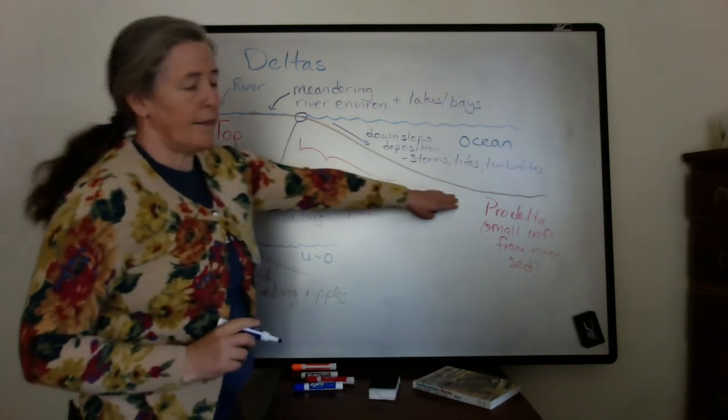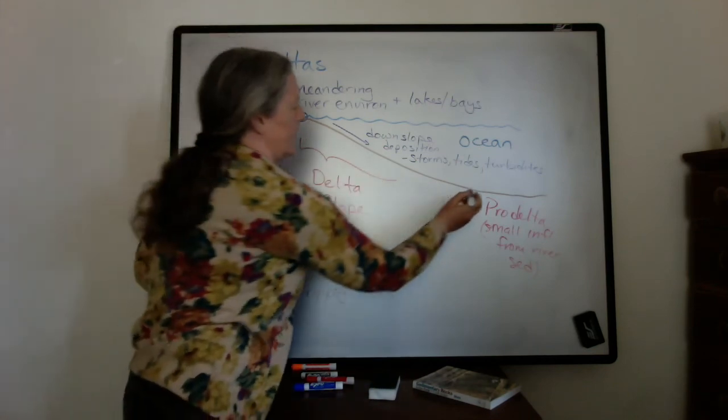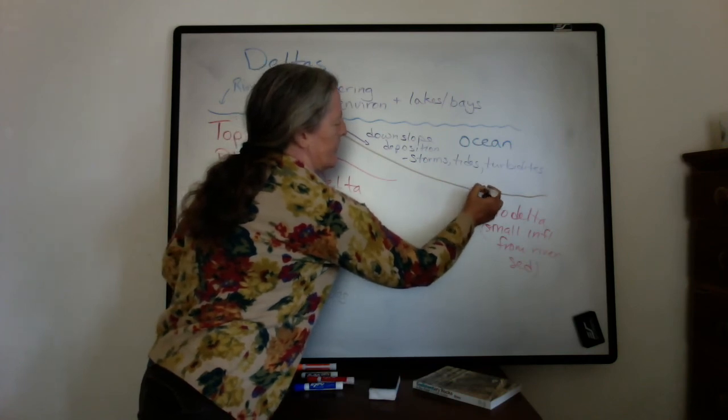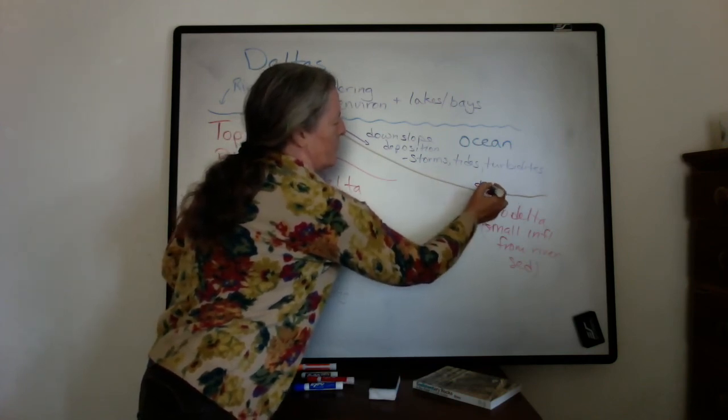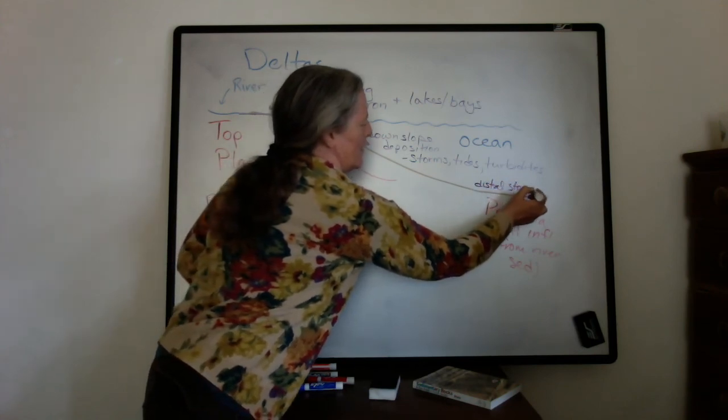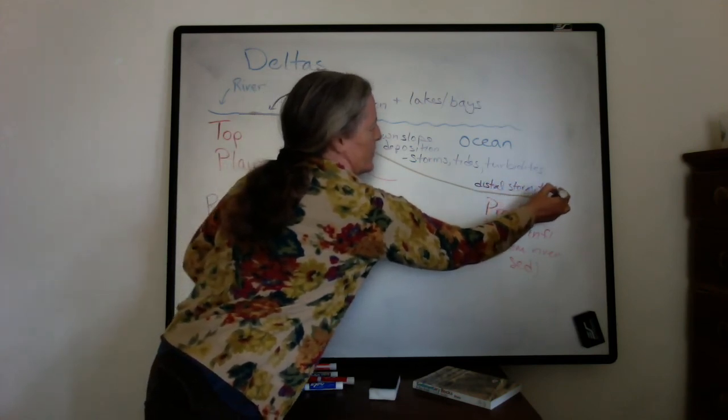In the pro-delta area, usually the types of things that you get are either distal storm deposits or distal turbidites.